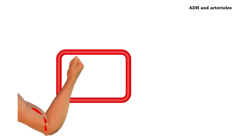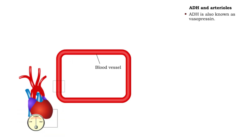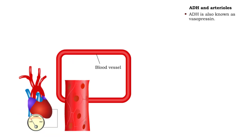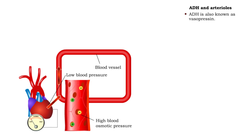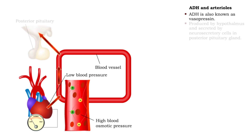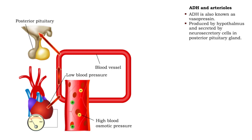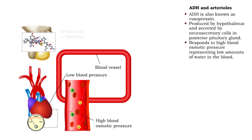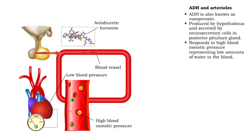Antidiuretic hormone, or ADH, responds to high blood osmotic pressure due to blood loss and low amounts of water in the blood. ADH, secreted by the posterior pituitary gland, binds to smooth muscle cells in arterial walls.